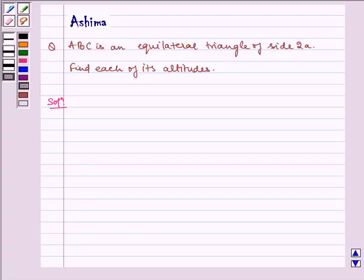Hello and welcome to the session. Let us understand the following question today. ABC is an equilateral triangle of side 2A. Find each of its altitudes.